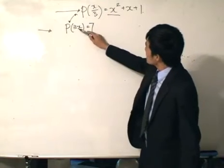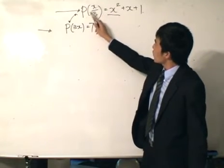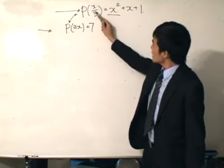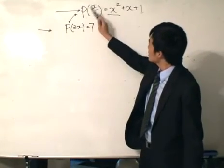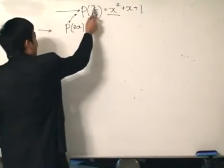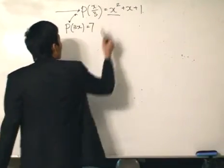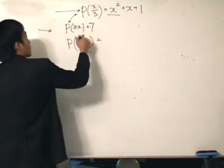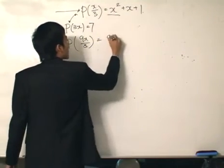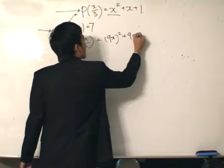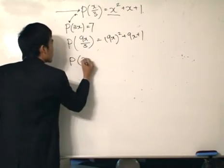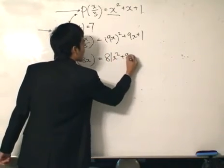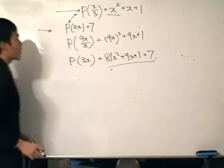So to go from here to here, most logically speaking, what I would choose for x over there would be 9x. Because 9x, 9 divided by 3, I get a 3. So I can immediately go from here to here if I substitute 9x inside x. Likewise, put it here and here. So the function of 9x divided by 3 is equal to 9x squared plus 9x plus 1. And this is equals to P(3x). 9 divided by 3 equals to 81x squared plus 9x plus 1 equals to 7. Solve accordingly.